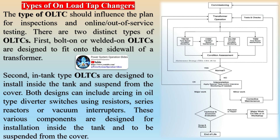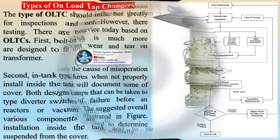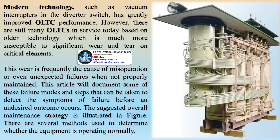This wear is frequently the cause of misoperation or even unexpected failures when not properly maintained. Several methods are used to determine whether equipment is operating normally. These include time-based maintenance (TBM), condition-based maintenance (CBM), online condition monitoring, and traditional time-based maintenance or number-of-operations approaches. These various methods can be employed individually but in most cases are combined for a more thorough analysis of operating condition.